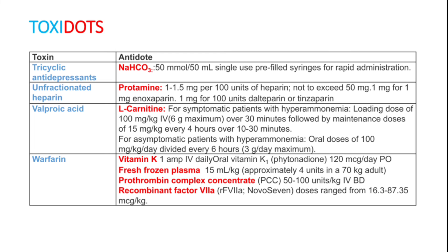Warfarin is used in patients with thrombophlebitis, DVT, and pulmonary embolism. If it produces severe bleeding tendency, give vitamin K — 1 ampoule IV daily. Fresh frozen plasma 15 ml per kg can be given. Prothrombin complex concentrate 50 to 100 units per kg IV BD should be given. Recombinant factor VIIa — doses range from 16.3 to 87.35 microgram per kg body weight.